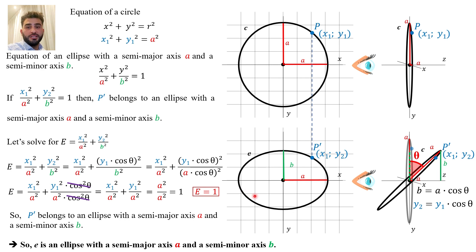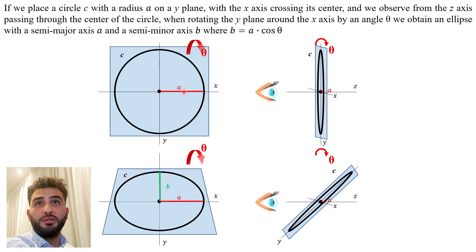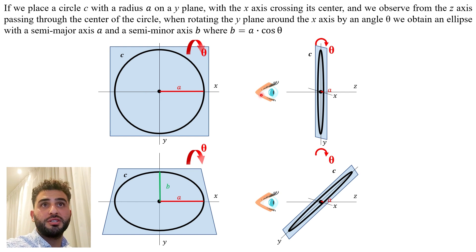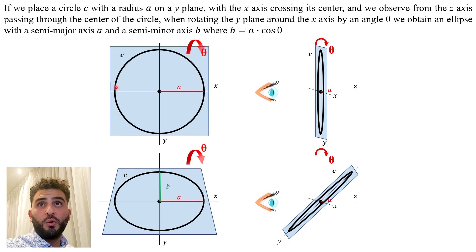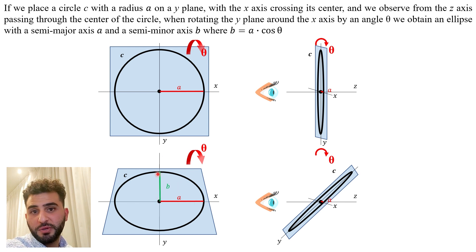So now I can affirm that if we draw a circle C with a radius A on the y-plane with the x-axis crossing its center, and we observe from the z-axis passing through the center of the circle, and we rotate the y-plane with an angle theta, we obtain or we observe an ellipse with a semi-major axis A and a semi-minor axis B.